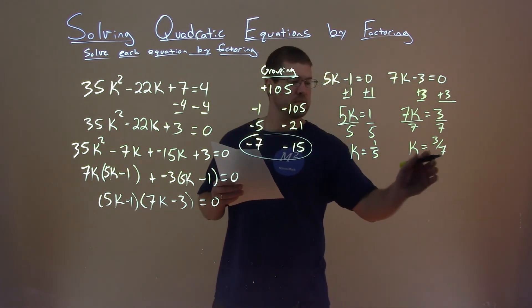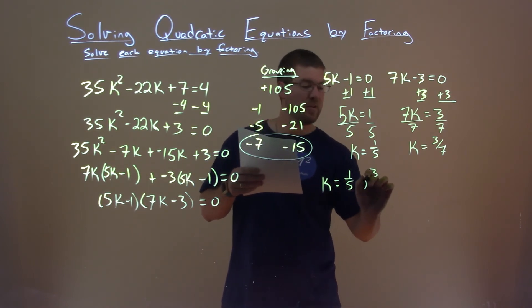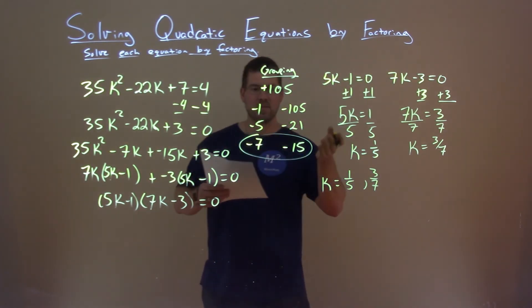And so our two solutions here can be combined to be in one statement: k is equal to 1 fifth and 3 sevenths, and that is our final answer.